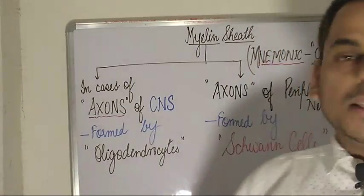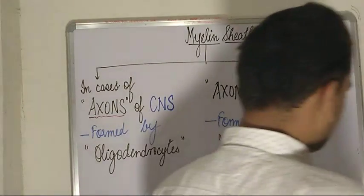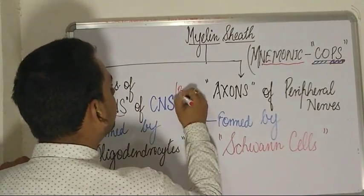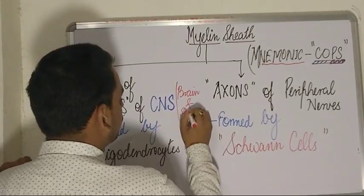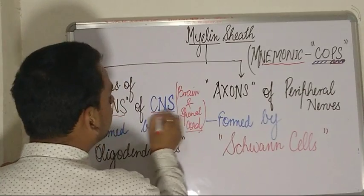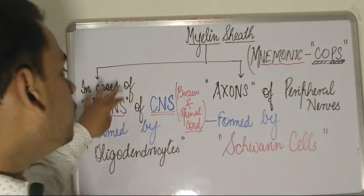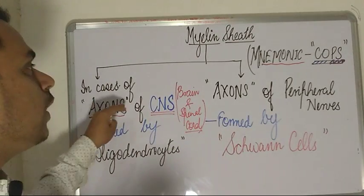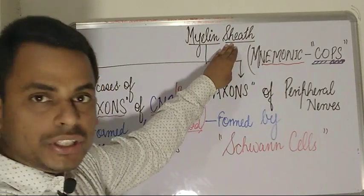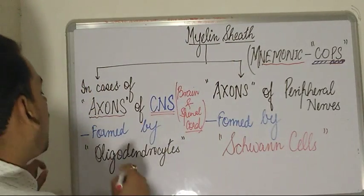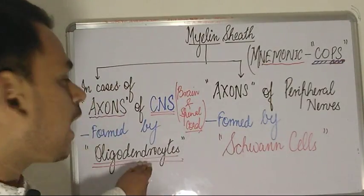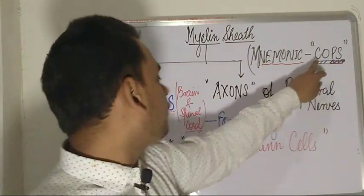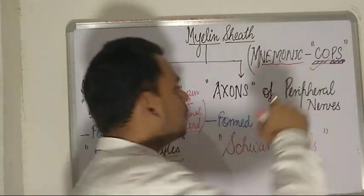In the central nervous system — comprising the brain and the spinal cord — the myelinated neurons have axons surrounded by a myelin sheath. In the case of the central nervous system, that myelin sheath is derived from oligodendrocytes. In the mnemonic COPS, the C refers to Central nervous system and the O refers to Oligodendrocytes — so 'CO' covers the first half of the mnemonic.